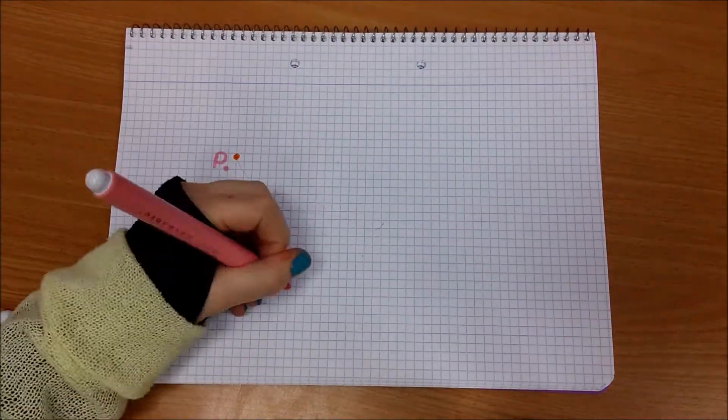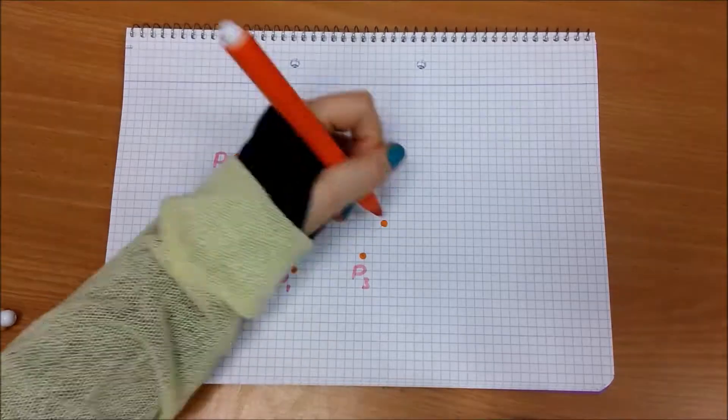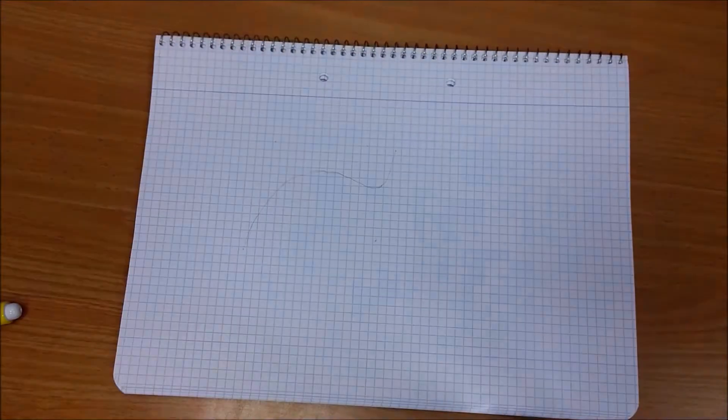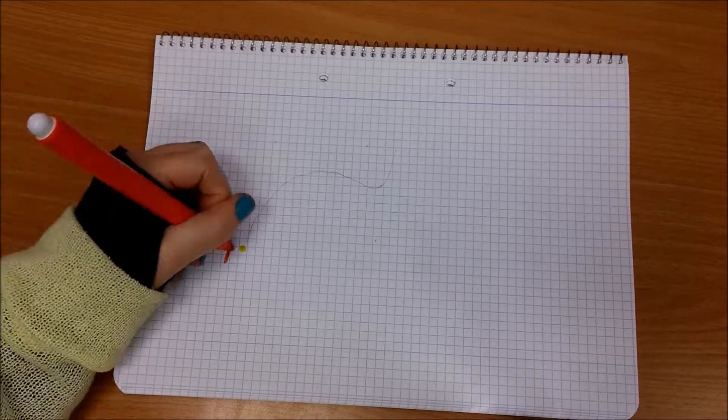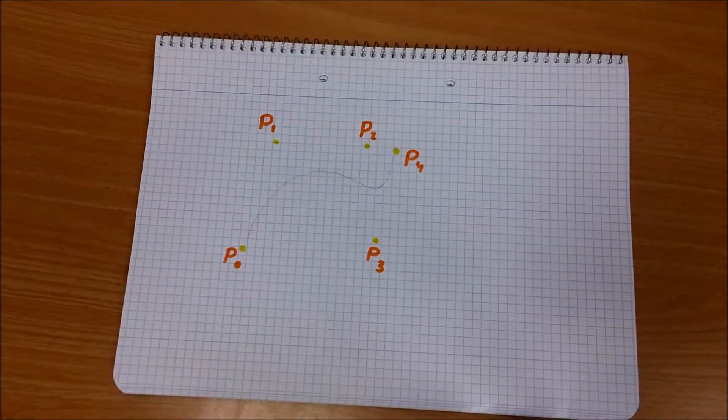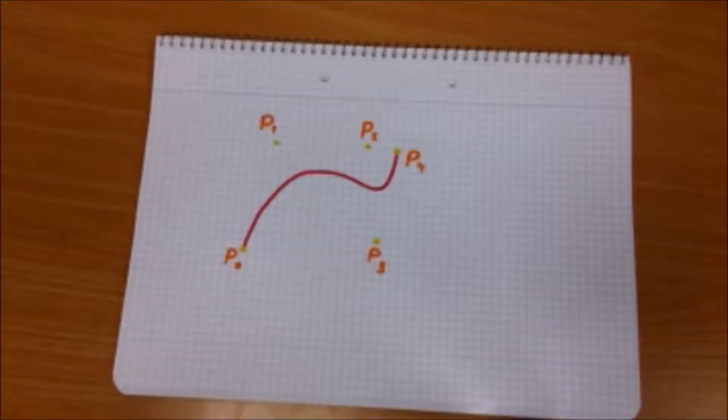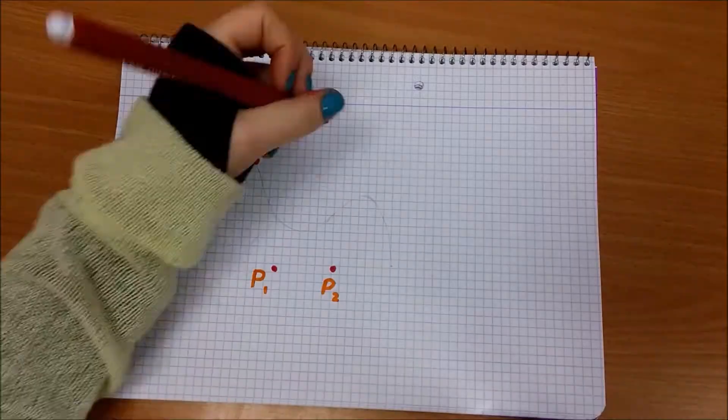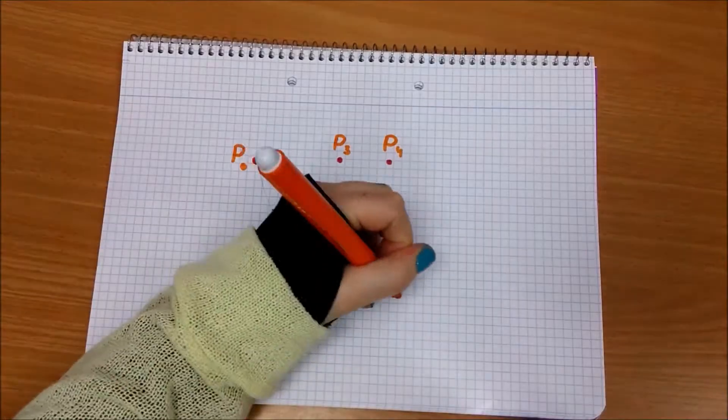This is a curve with 5 control points. This one also has 5 control points. This one also has 5 control points. This is what a curve with 6 control points looks like.